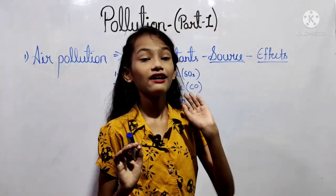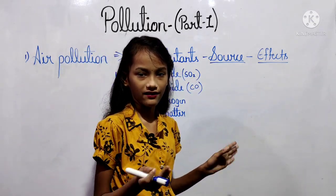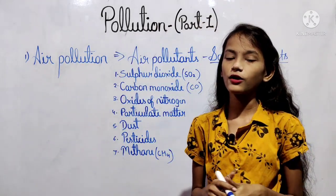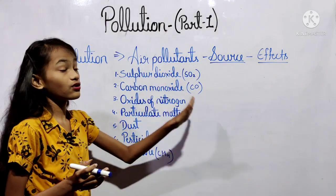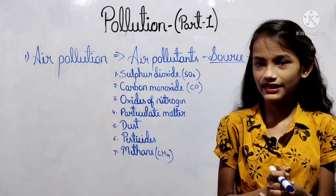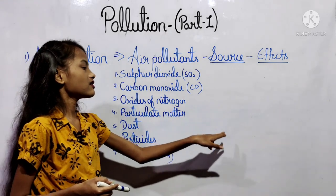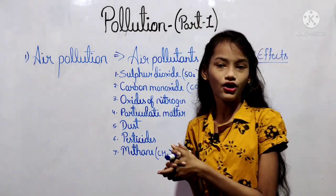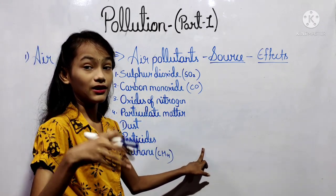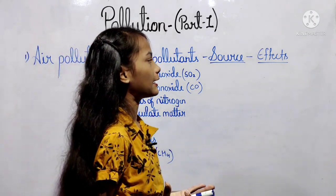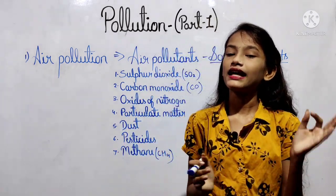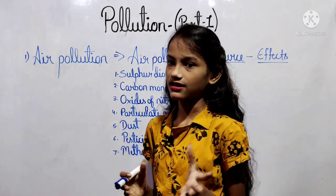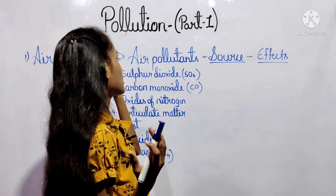The fifth pollutant is dust — its source is vehicular and industrial smoke, and its effect is silicosis. The sixth pollutant is pesticides — its source is the production and use of pesticides, and its effects are mental weakness and death due to prolonged exposure. The seventh pollutant is methane — its source is industrial leakage, and its effects include poisoning, skin cancer, asthma, and respiratory diseases.